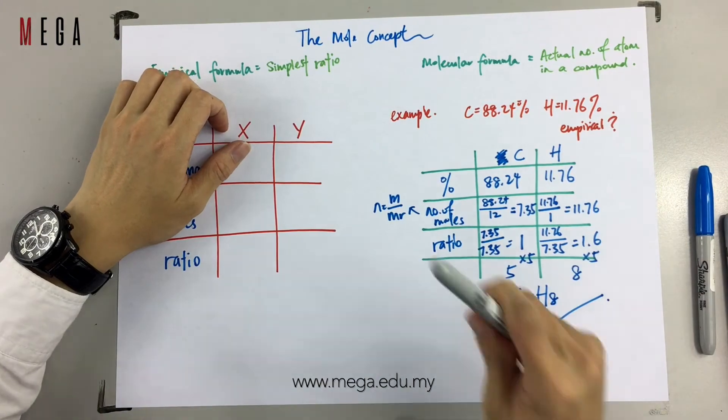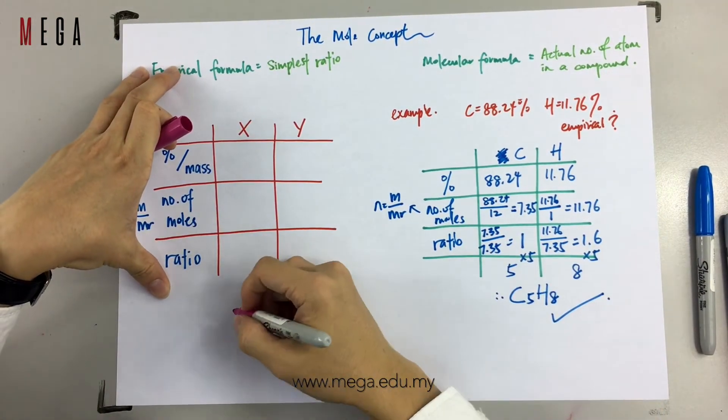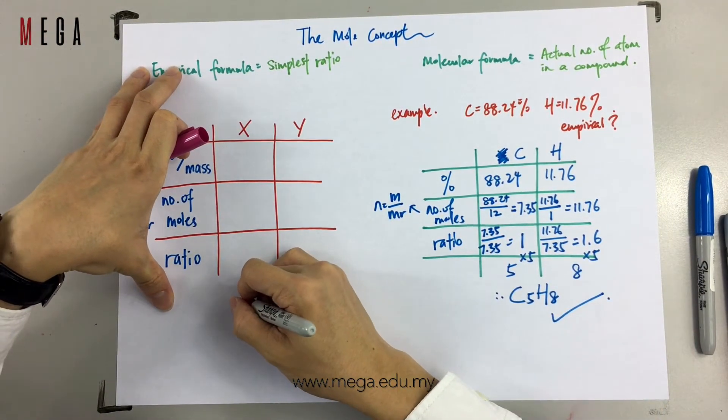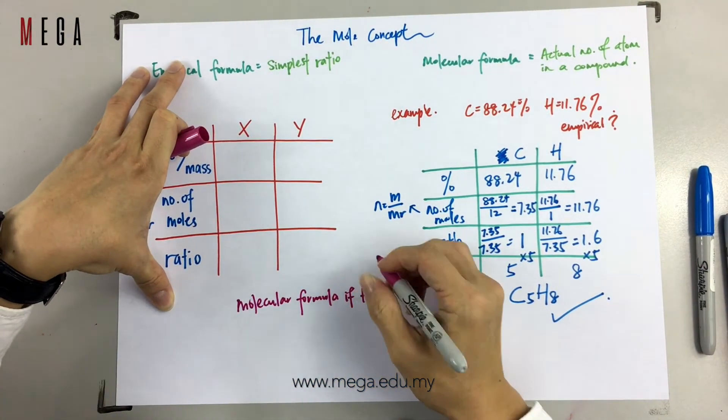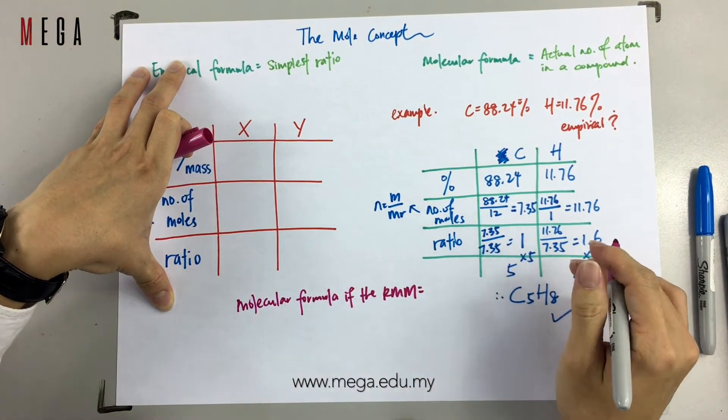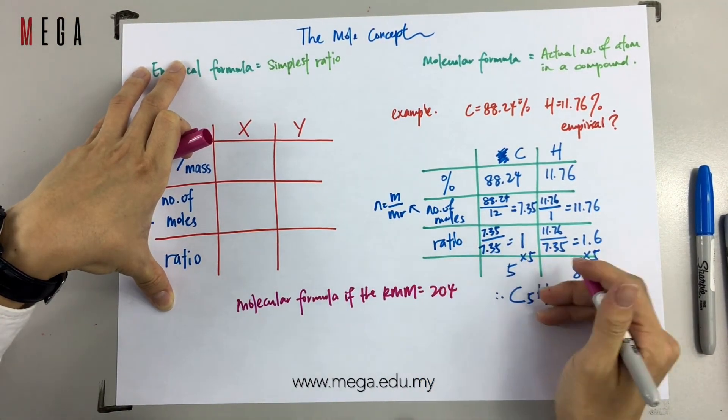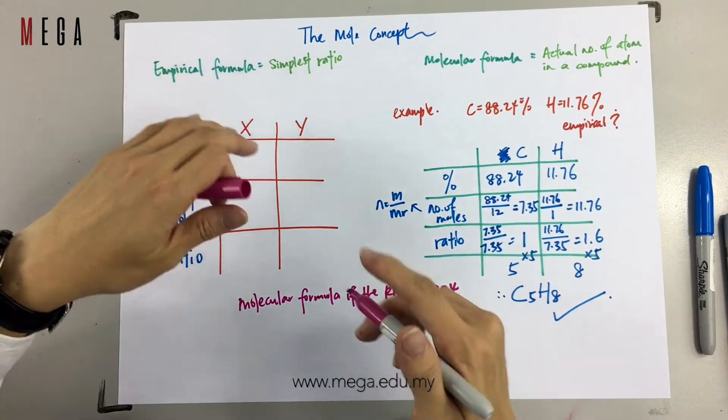Next, for example, how can you use empirical formula to find the molecular formula? Remember, in order to find the molecular formula from the empirical formula, you need the relative molecular mass. In this case, the relative molecular mass is 204. What is the molecular formula? This is how you find it.